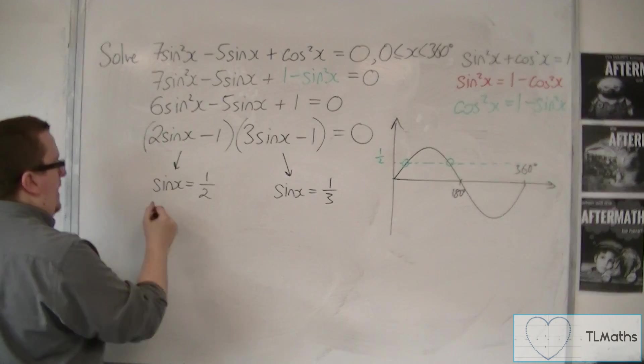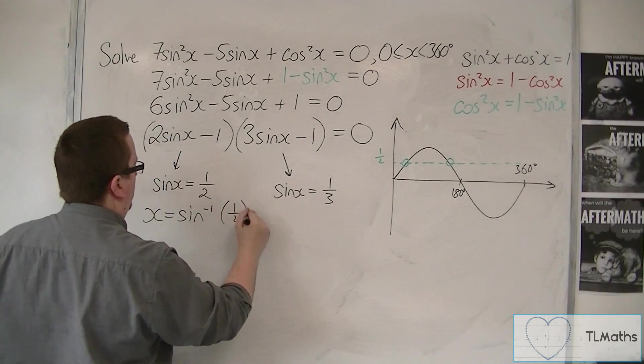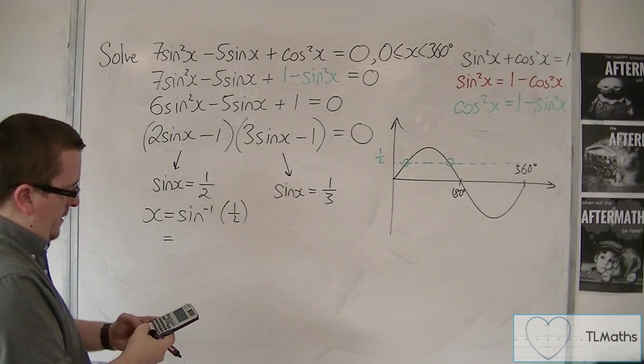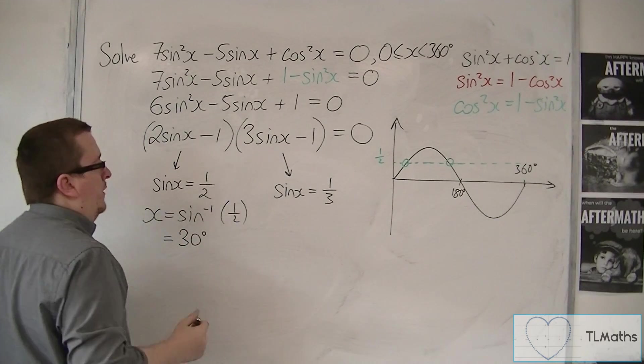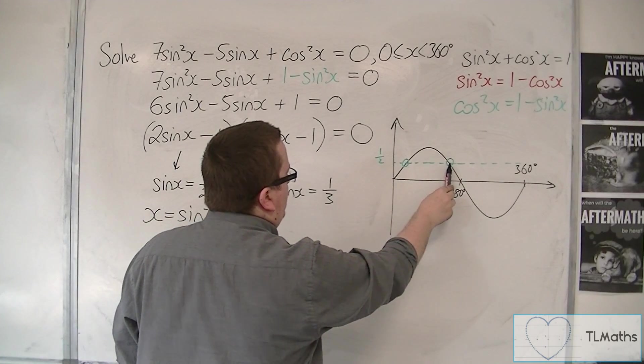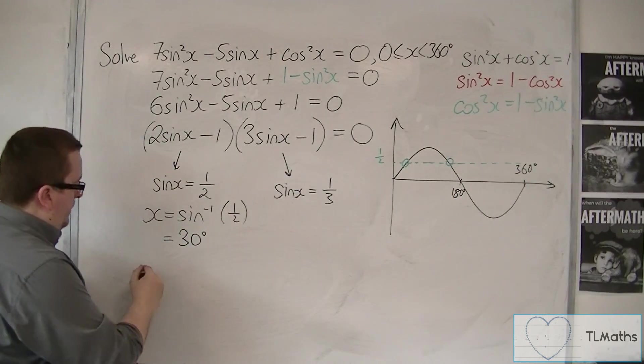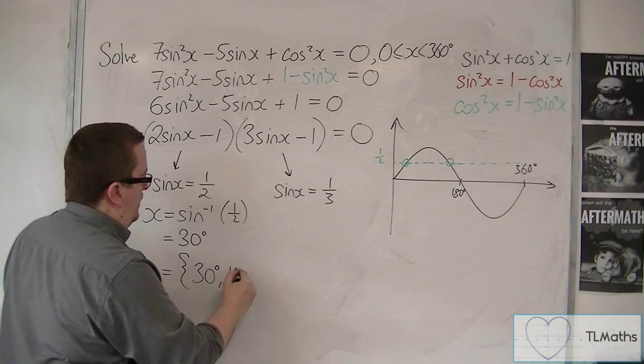I can take inverse sine of 1/2. Inverse sine of 1/2 is 30 degrees, so this one is 30 degrees. This one is 180 - 30 degrees. So the two solutions are 30 and 150.